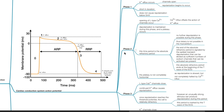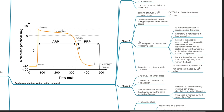During Phase 2, opening of L-type calcium channels occurs; calcium influx offsets potassium efflux, depolarization is maintained, and a plateau occurs. This time period is the absolute refractory period — no further depolarization is possible, thus tetany is not possible in the myocardium. The end of the absolute refractory period is signaled by the earliest transient depolarization that can be elicited as sufficient sodium channels are present, and this corresponds to the beginning of the T wave on the ECG. The plateau is not completely horizontal as repolarization is slowed but not completely halted by calcium influx.